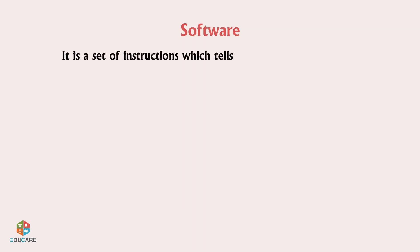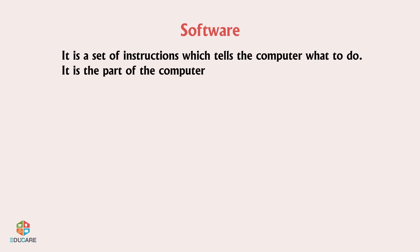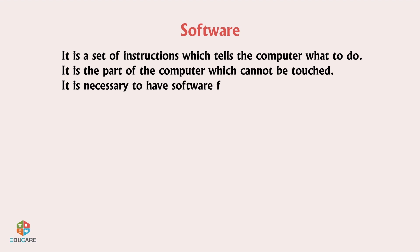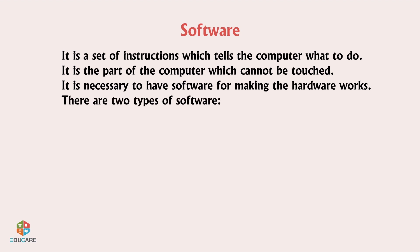Software is a set of instructions which tells the computer what to do. It is the part of the computer which cannot be touched. It is necessary to have software for making the hardware work. There are two types of software: System software and Application software.